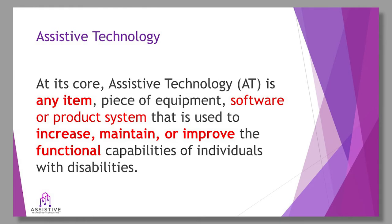We're going to start with the definition of assistive technology. At its core, assistive technology is any piece of equipment, software, apps, or products that maintain, improve, or increase an individual's independence in doing a task. It doesn't have to be high-tech tools — it could be a straw, a bent spoon, a pencil with a pencil grip, or a post-it note. Assistive technology has a wide spectrum of how it's used.